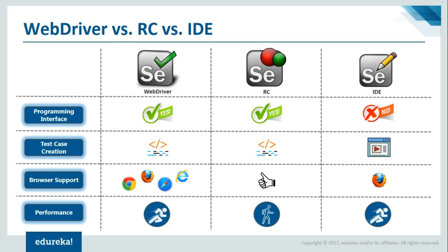Let me talk about the different suite of tools in Selenium, because Selenium is not just one tool — there are three different flavors: WebDriver, RC, and IDE. There's also Selenium Grid, but that's not a complete testing tool on its own — it's used alongside WebDriver for deploying tests on other hosts. Let's compare these three tools according to their feature sets. Right now, WebDriver is the most popular and most used, because it has a programming interface where you can script your own logic.